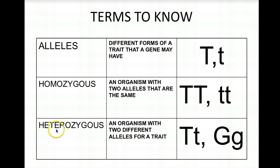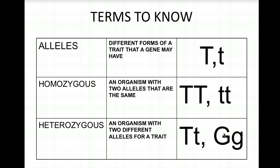Heterozygous — hetero meaning different — means you have two different alleles for a particular trait. An uppercase T and lowercase t together is a heterozygous genotype, but it still represents a tall plant because having at least one dominant allele means that trait shows up. For example, with green and red flowers where green is dominant, a heterozygous Gg plant would be green. Two lowercase g's would be needed to produce a red plant.